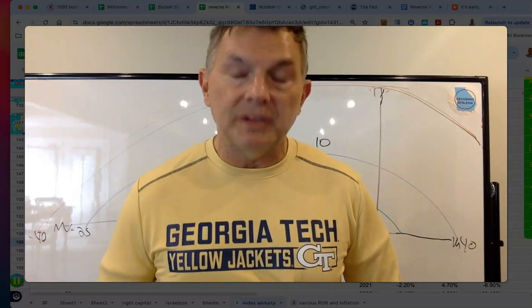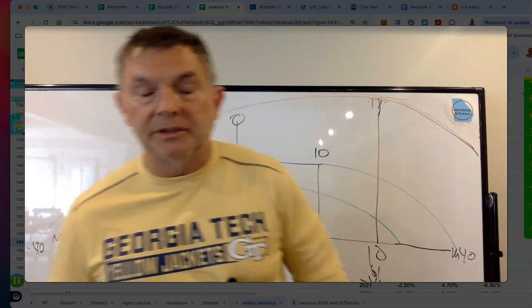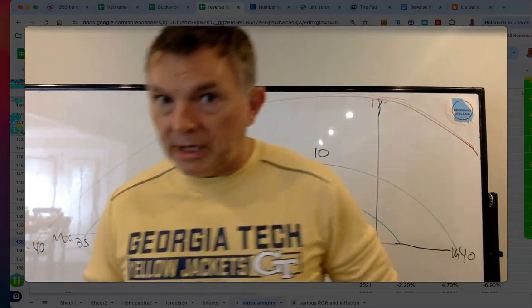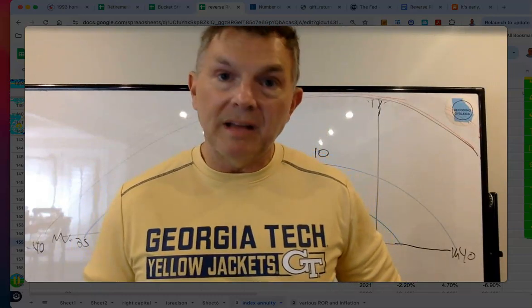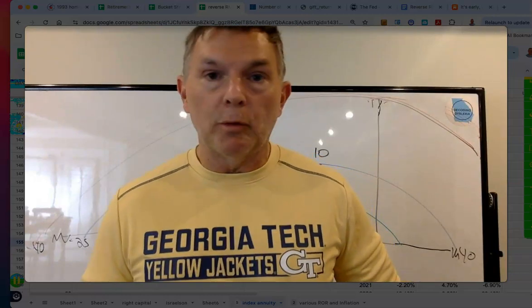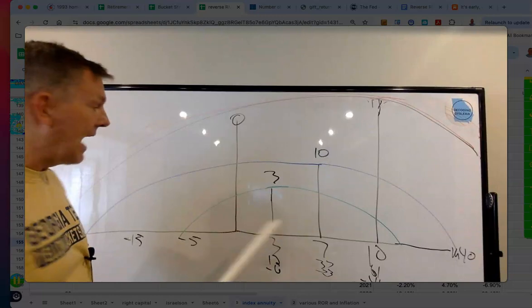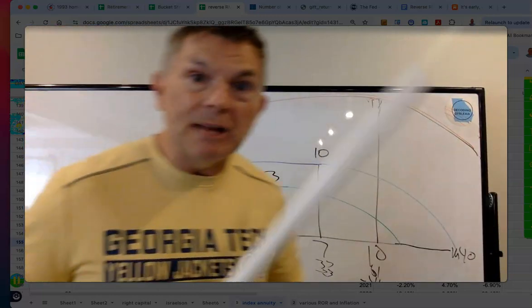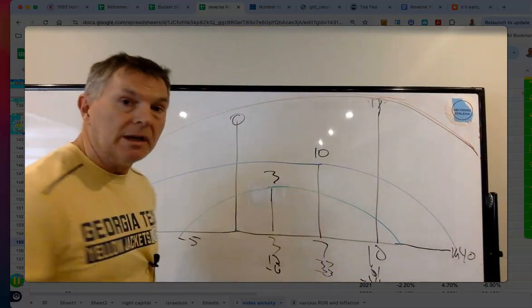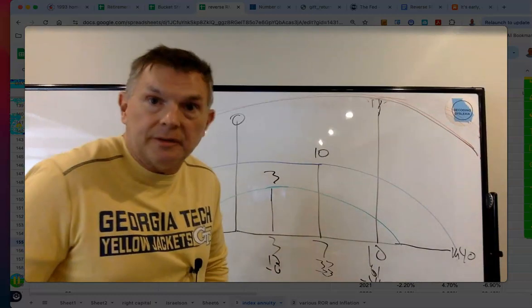This is based on the numbers we're inputting — it doesn't mean there can't be a black swan event that changes standard deviations. Look at what happened in 2022: the standard deviation of bonds went up significantly because 2022 had volatility in the bond market that had never been seen before, due to the huge interest rate increases. So no bond prognosticator with any standard deviation model had 2022 in their range. These numbers are based on historical rates of return and historical volatility.